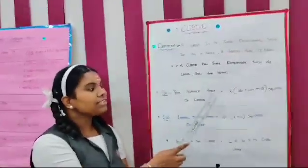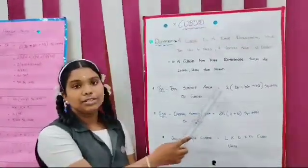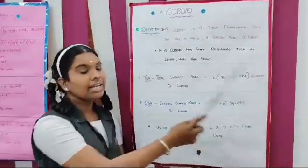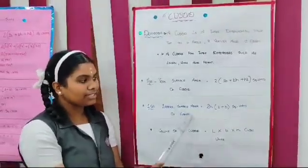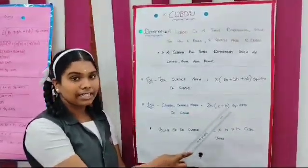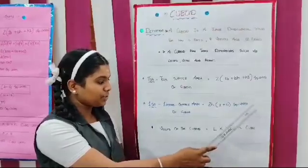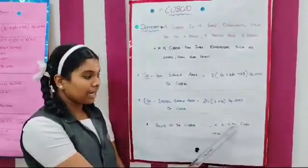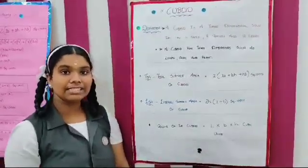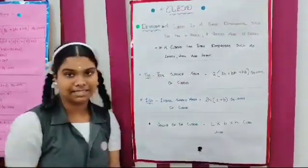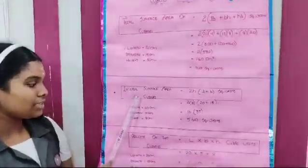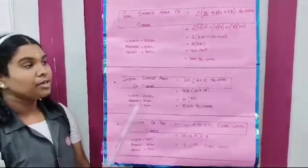Next, we see some formulas. Total surface area of a cuboid is equal to 2 into (length × breadth + breadth × height + height × length) square units. Lateral surface area of a cuboid is equal to 2 × height × (length + breadth) square units. Volume of the cuboid is equal to length × breadth × height cubic units. Let us see some examples.